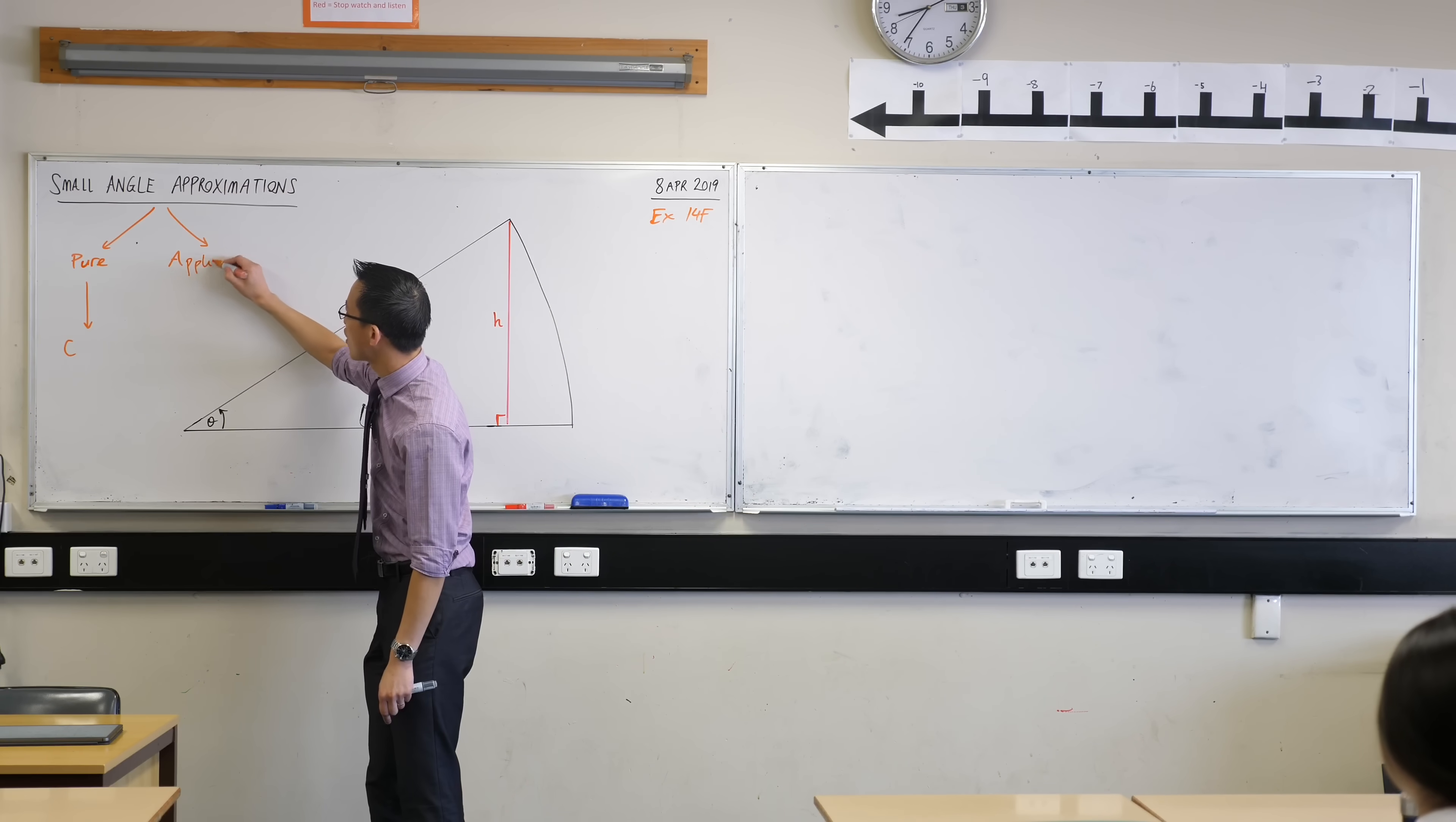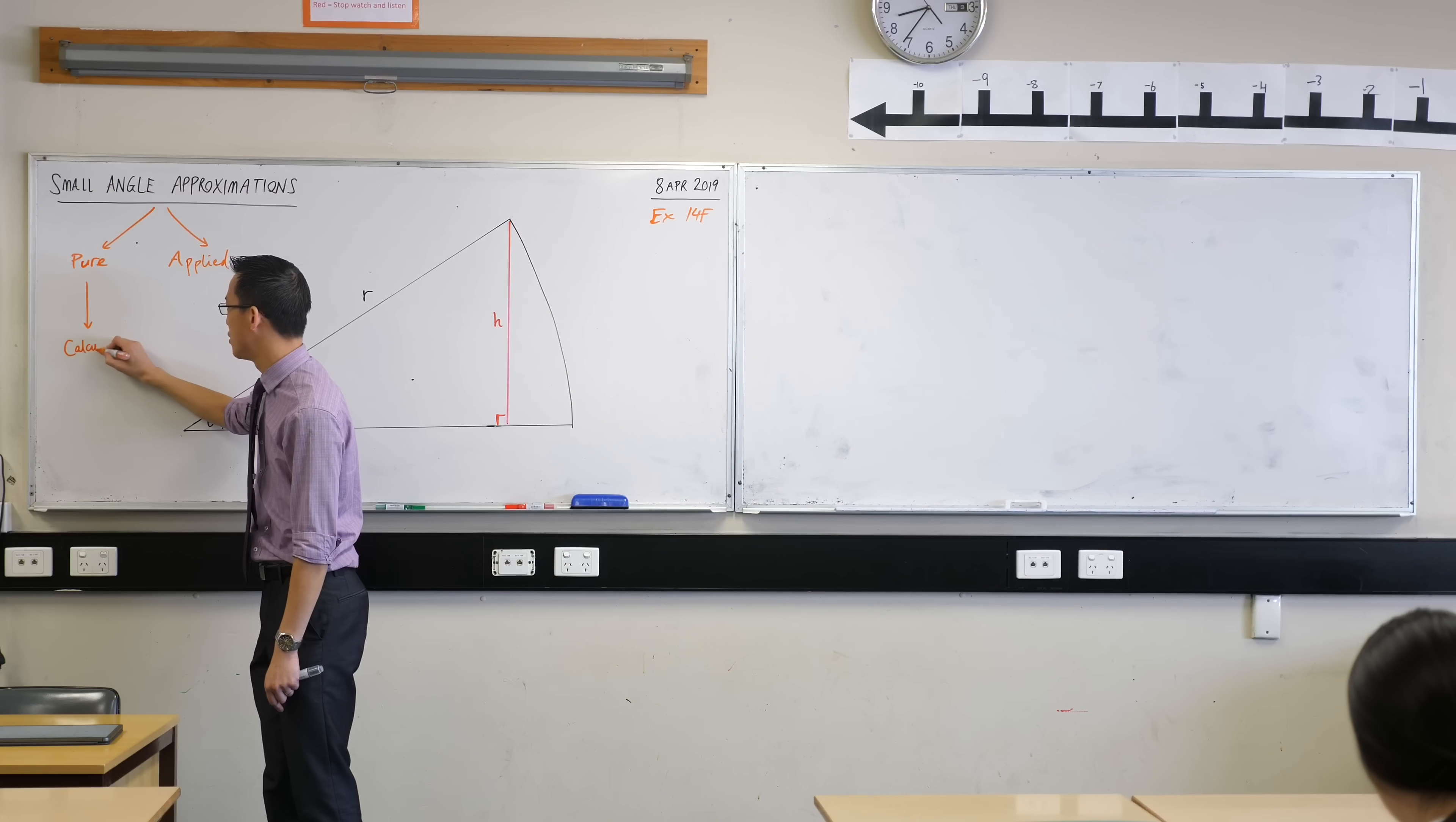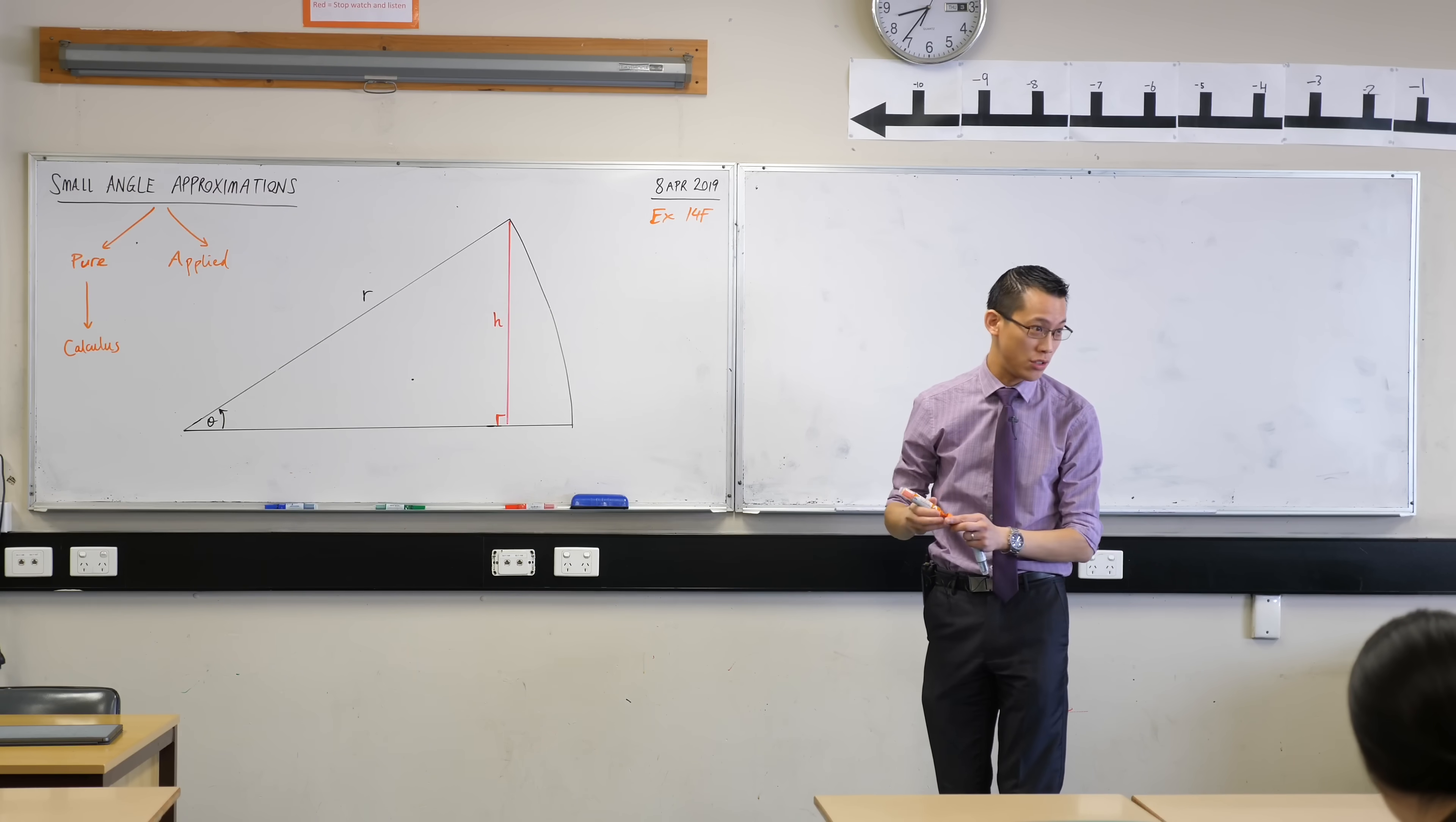So there are some pure problems that we can solve with this result I'm going to show you. There are some applied problems we can solve, but interestingly, and actually this is often the case, it's going to be the pure result that becomes more interesting to us because it's going to take us into calculus of trigonometric functions. So we're going to focus on those top two because that's where you need to bed things down before you get into calculus, but this is just so you know where the trajectory is headed.